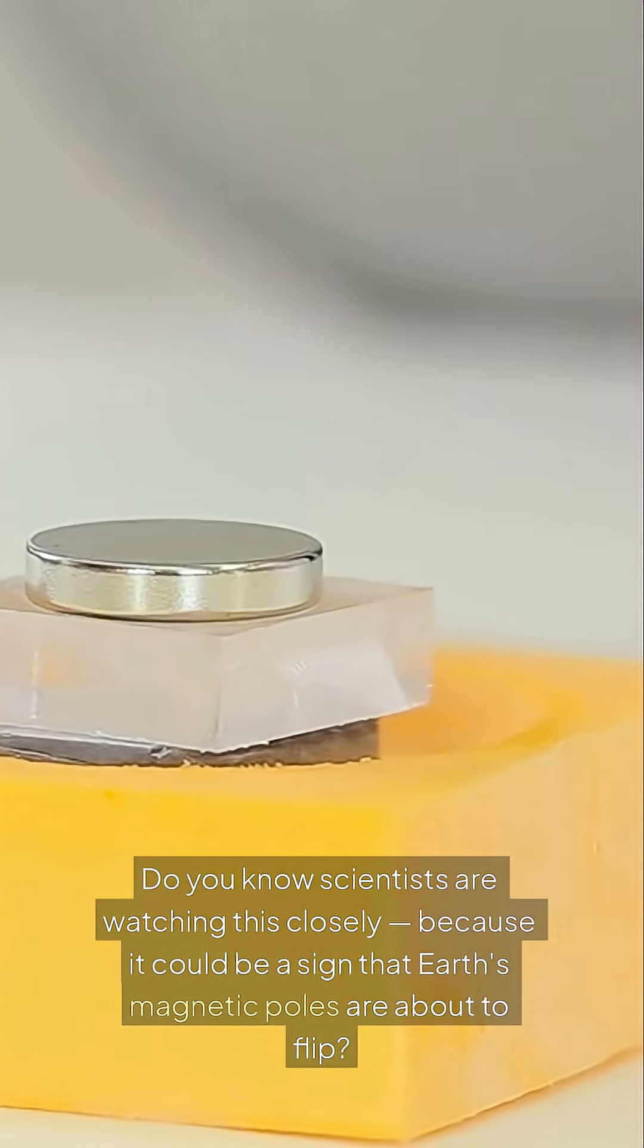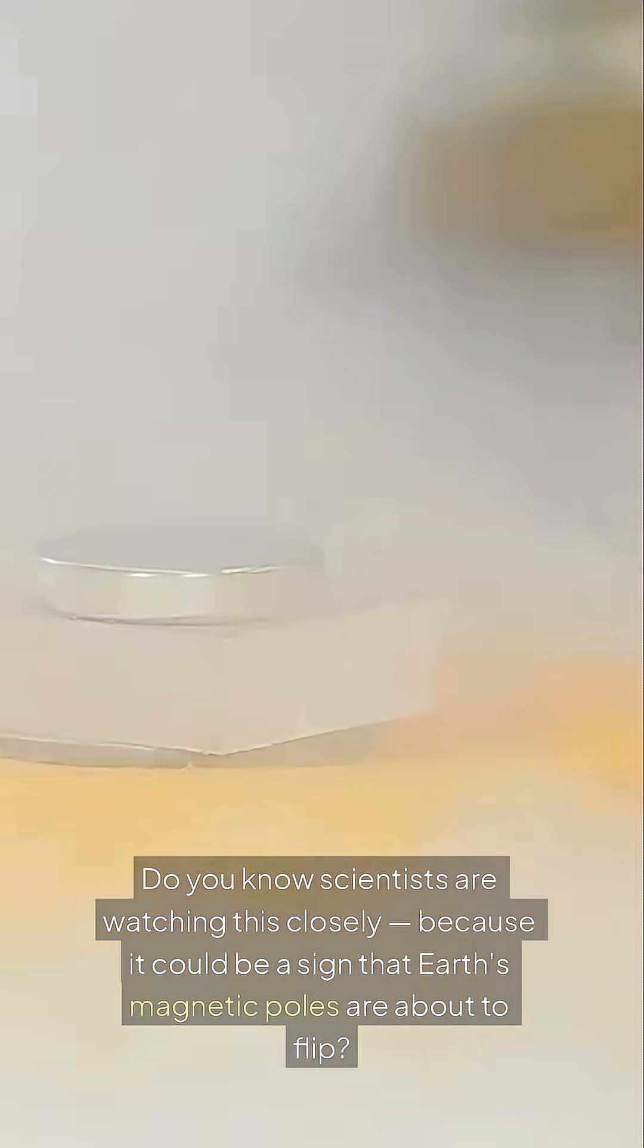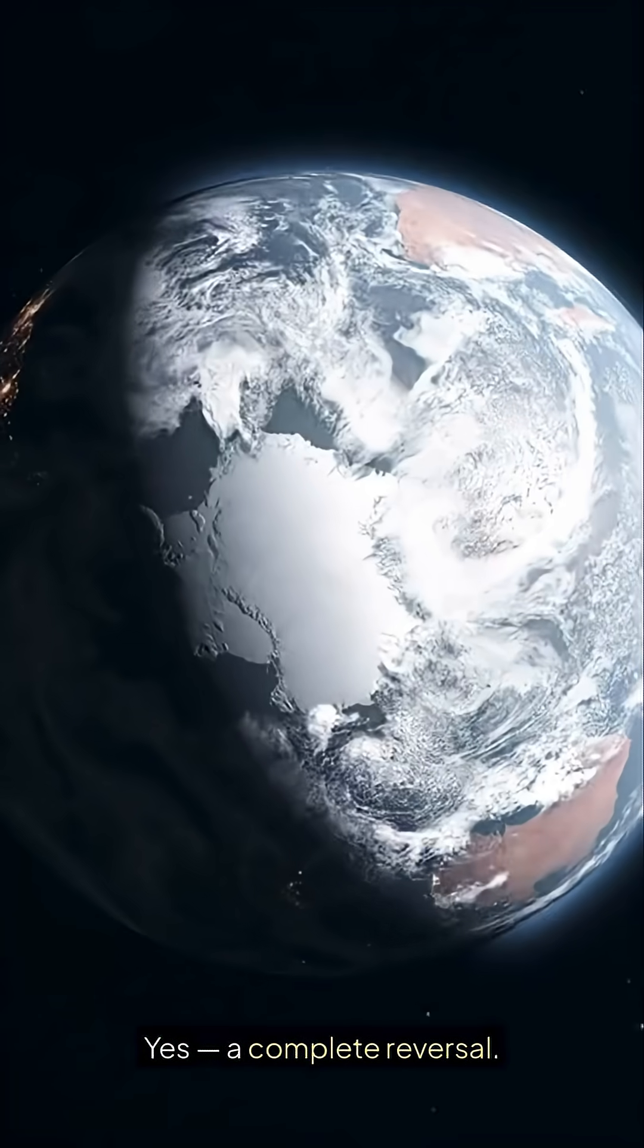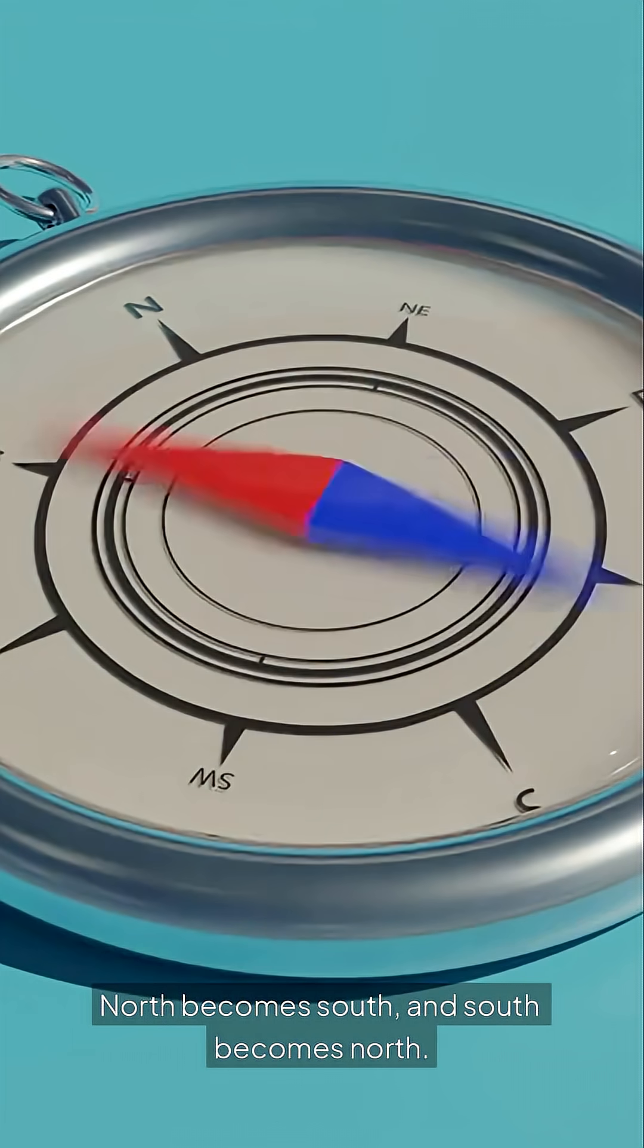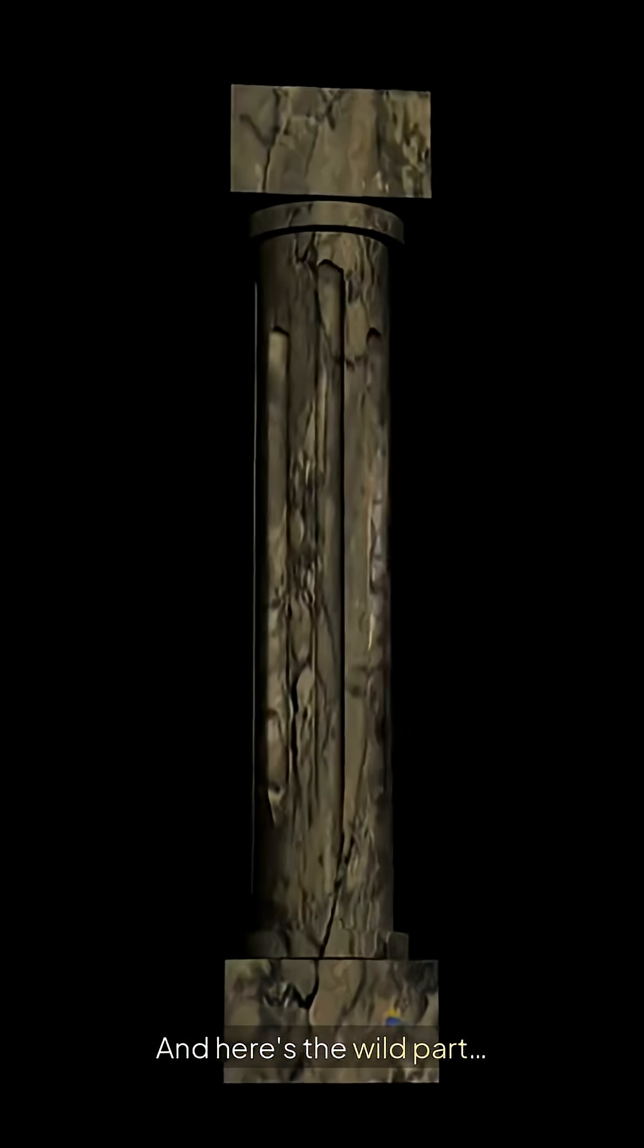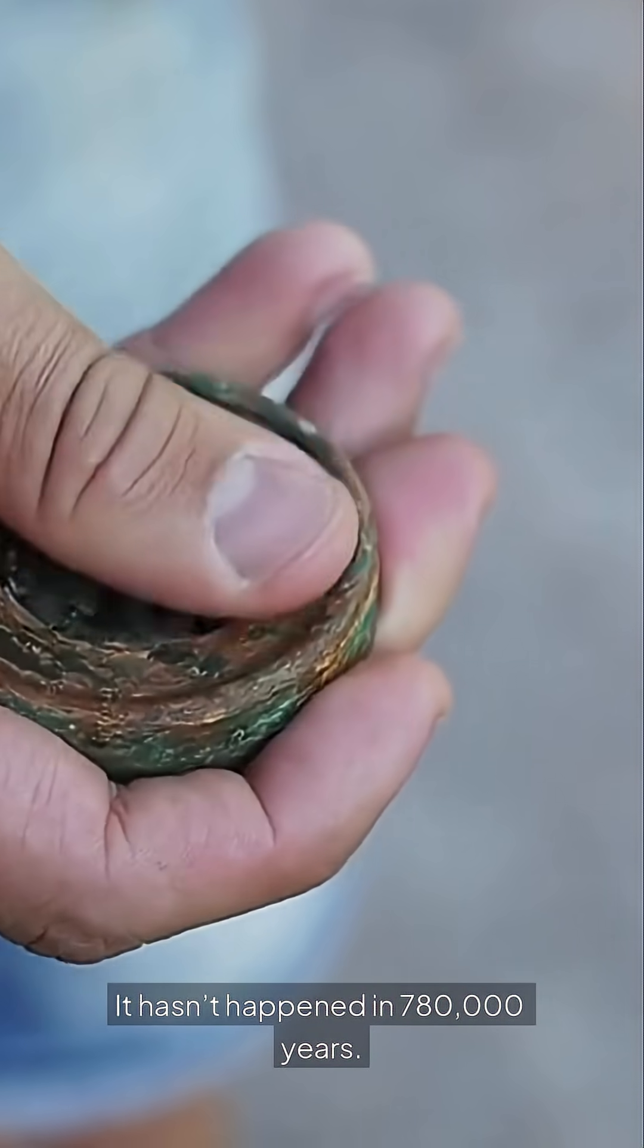Do you know scientists are watching this closely, because it could be a sign that Earth's magnetic poles are about to flip? Yes, a complete reversal. North becomes South, and South becomes North. And here's the wild part, it hasn't happened in 780,000 years.